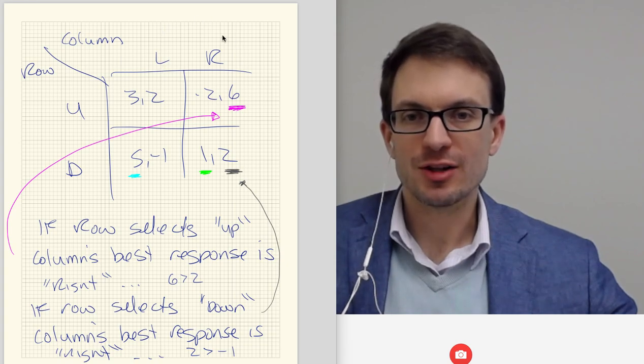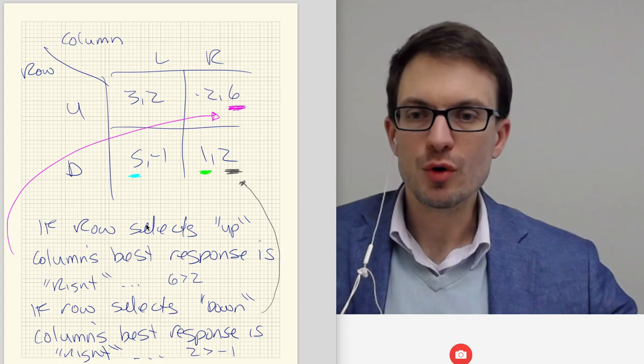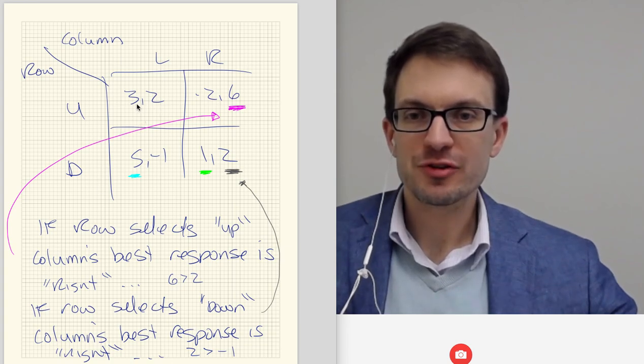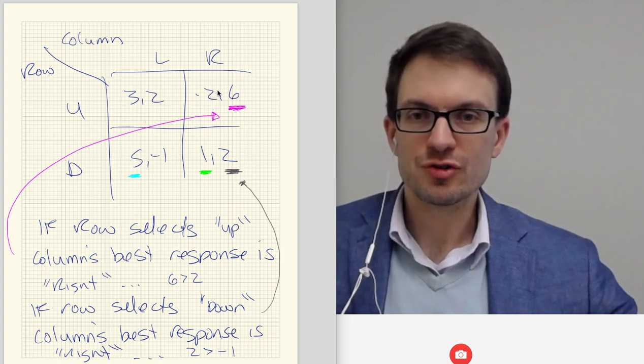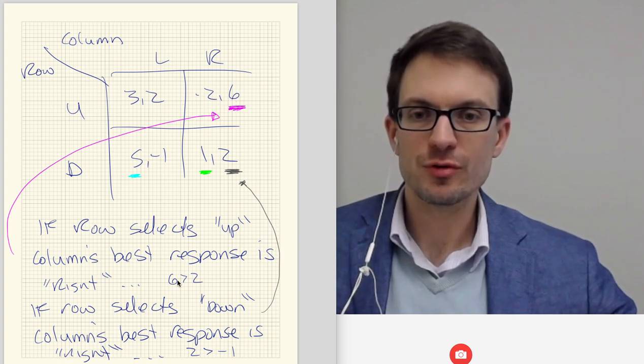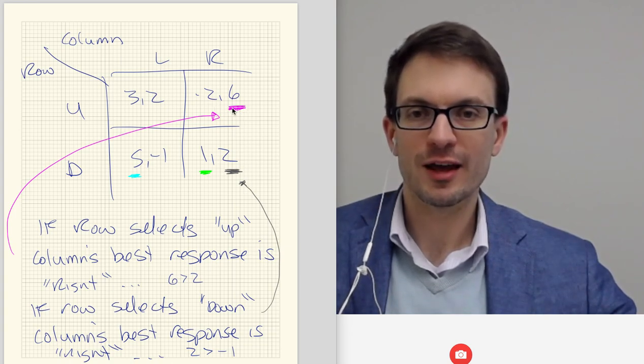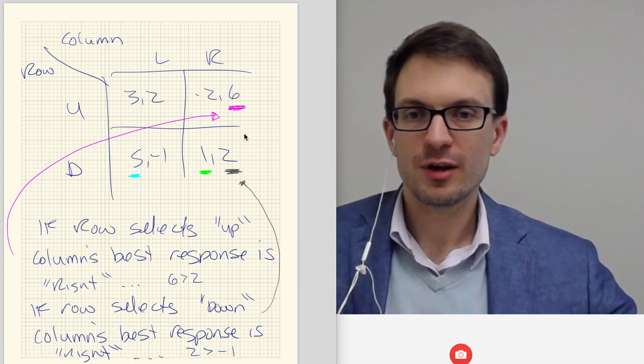Okay. Now let's adopt the perspective of column and see how column should respond conditional on row's choice. So if row selects up, column's best response is actually to choose right. If row has selected up, 6 is bigger than 2, so column's best response to up is right. So I'll underline 6 indicating that that's what column wants to choose.